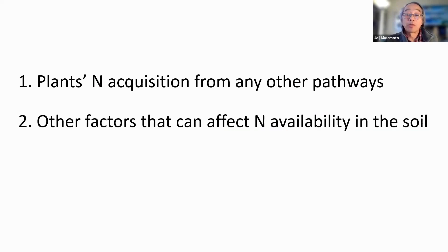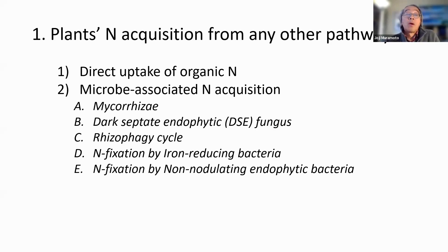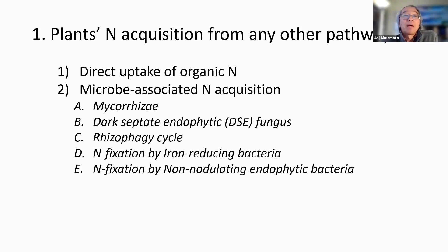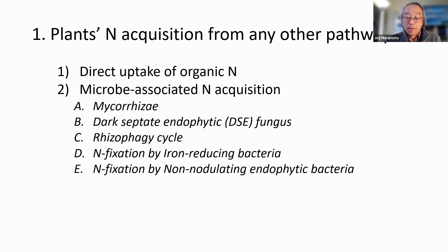Today I'm going to cover two main areas. First, plant nitrogen acquisition from non-traditional pathways. Second, other factors that can affect nitrogen availability in the soil. For the first topic, I'll cover: direct uptake of organic nitrogen, and microbe-associated nitrogen acquisition, which includes mycorrhizae fungi, dark septate endophytic fungi, the rhizophagy cycle, nitrogen fixation by iron-reducing bacteria, and nitrogen fixation by non-nodulating endophytic bacteria.